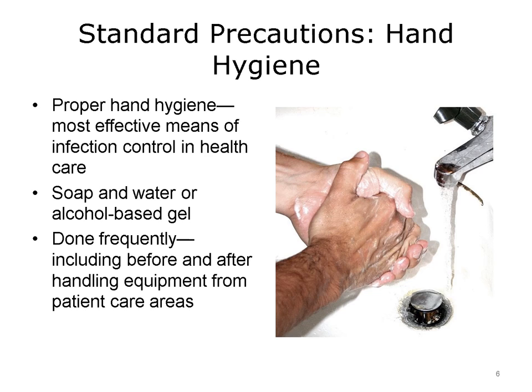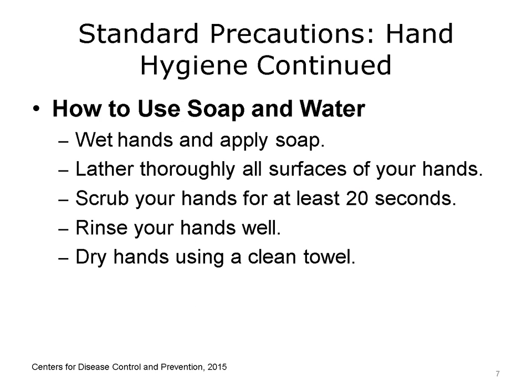When it comes to hand hygiene, too much is better than not enough. The CDC provides guidelines for proper hand hygiene using soap and water: Wet your hands with clean, running, warm water, turn off the tap, and apply soap. Lather your hands by rubbing them together with the soap. Be sure to lather the backs of your hands, between your fingers, under your nails, rings, and jewelry. Scrub your hands for at least 20 seconds — need a timer? Hum the Happy Birthday song from beginning to end twice. Rinse your hands well under clean, running water. Dry your hands using a clean towel and dispose of the towel in an appropriate bin.